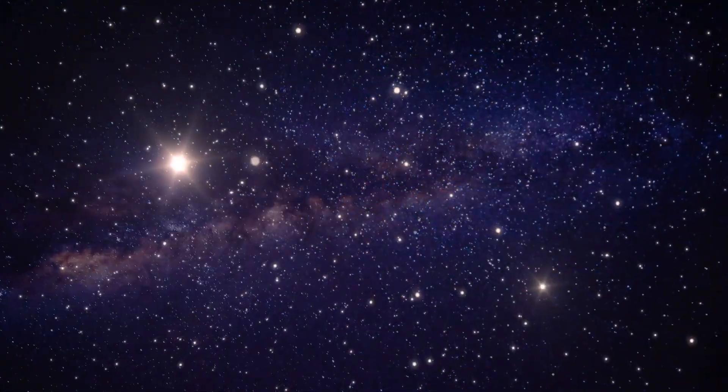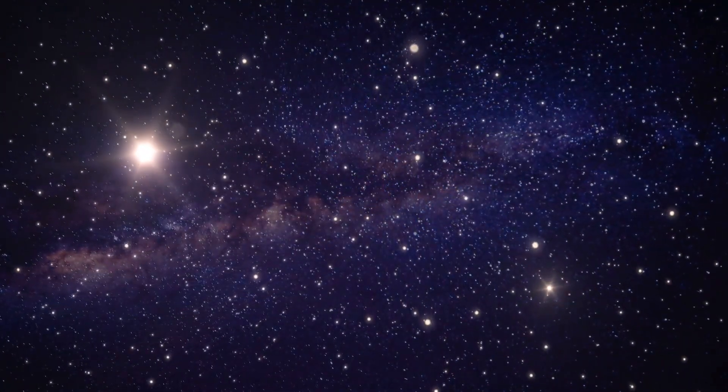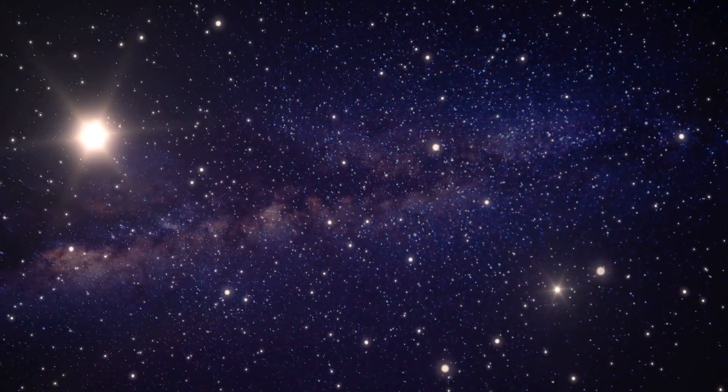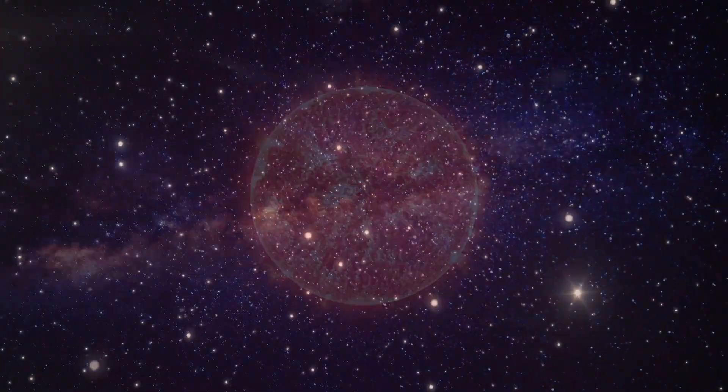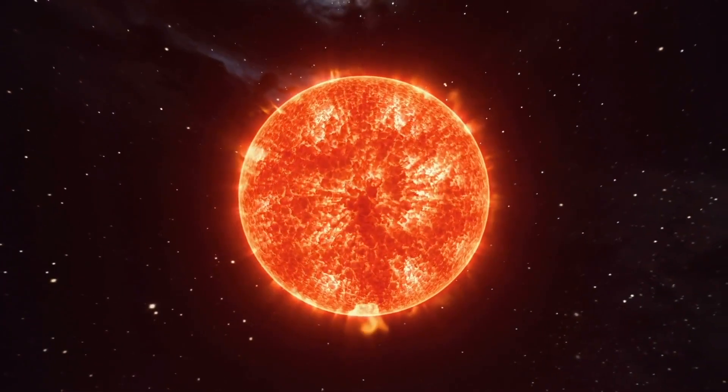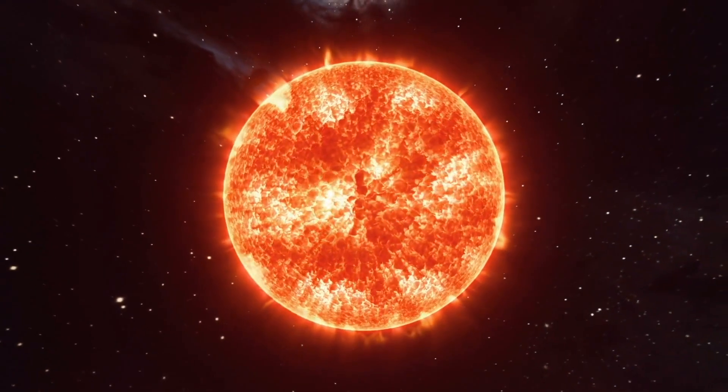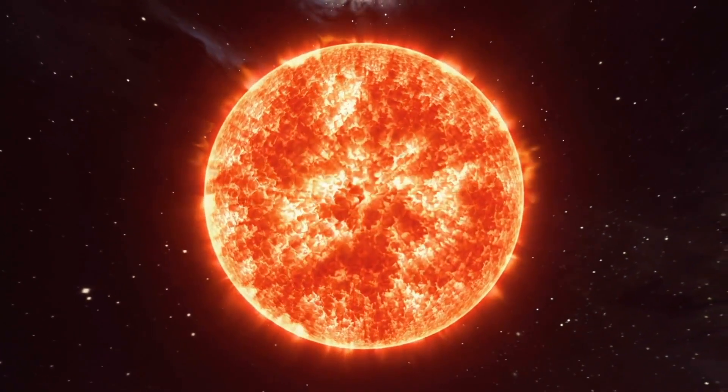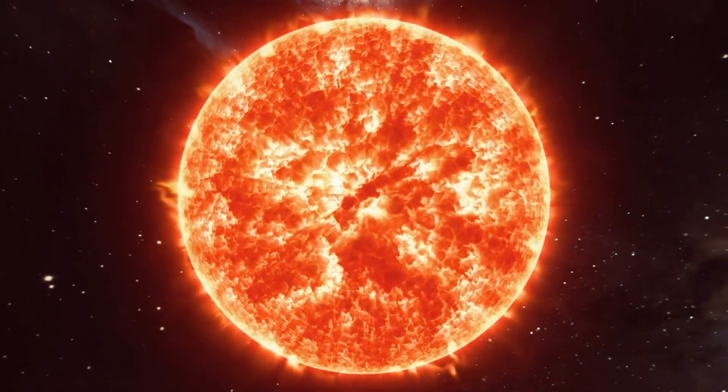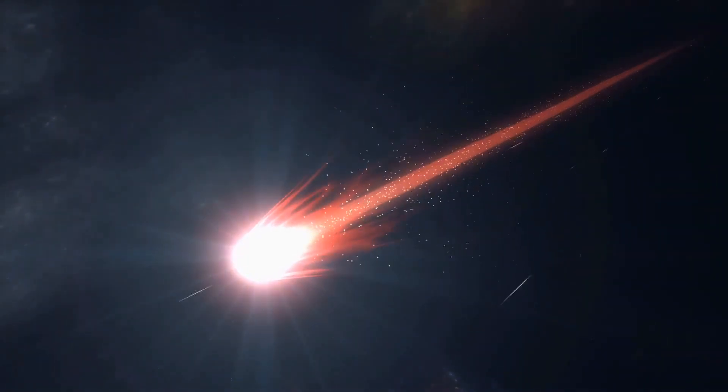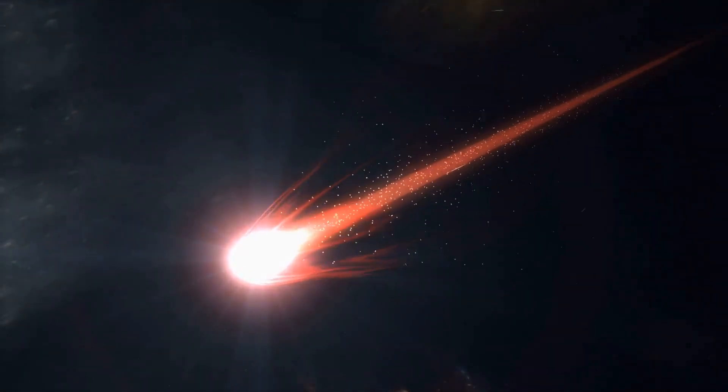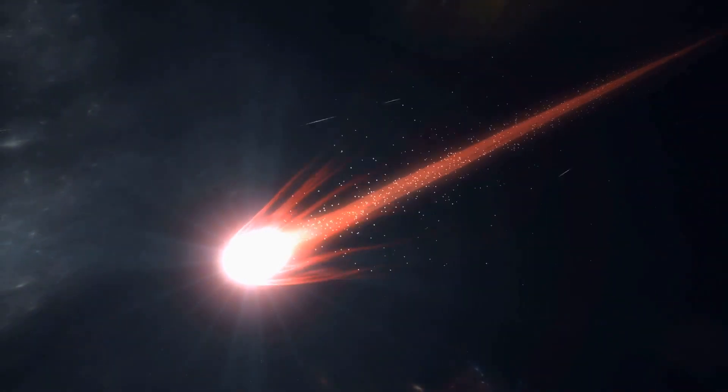During its time in the main sequence, Betelgeuse primarily burned hydrogen in its core, maintaining stability and brilliance for millions of years. As the hydrogen depleted, the core contracted, temperatures and pressures rose, leading to the outer layer's expansion, and Betelgeuse transformed into a red giant. This phase was a precursor to its current status as a red supergiant, during which it has undergone dramatic transformations.